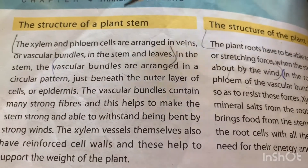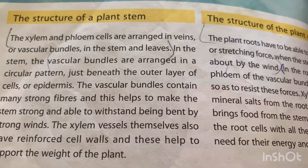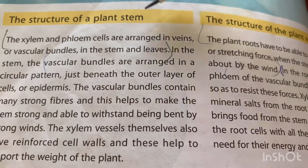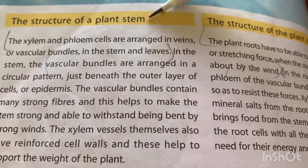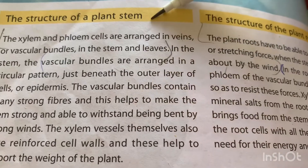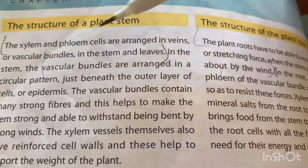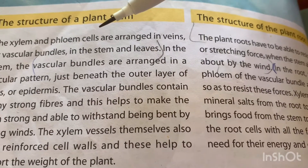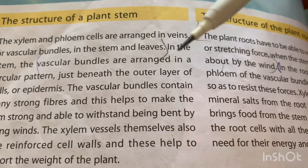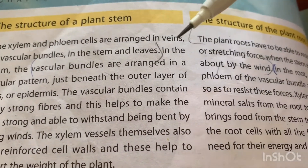Before moving on to the actual lecture, let's note something about the stem. Stems usually consist of three tissues: number one is dermal tissue, number two is ground tissue, and number three is vascular tissue. Vascular tissues provide long-distance transport and structural support.